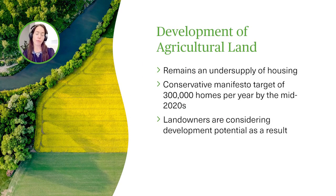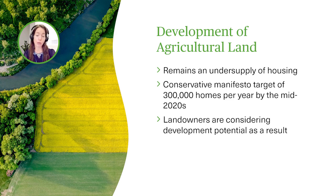The development of agricultural land is something we're obviously seeing a lot of, purely because there does remain an undersupply of housing at present. The Conservative manifesto target of 300,000 homes per year by the mid-2020s remains in place, although we'll have to see how they're doing against that. And as a result of this demand, landowners are considering the development potential of their own land. What we're also seeing is a lot of large estate owners looking at diversifying their portfolio. Quite often, their land will include an agricultural tenancy, and they're asking for advice on how they terminate it with a view to possibly developing that land in the future.